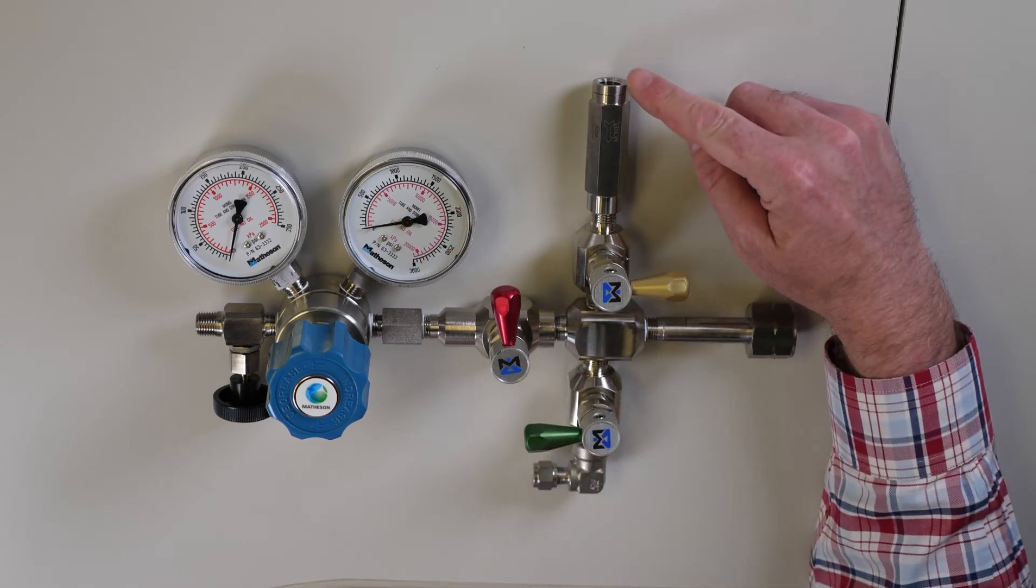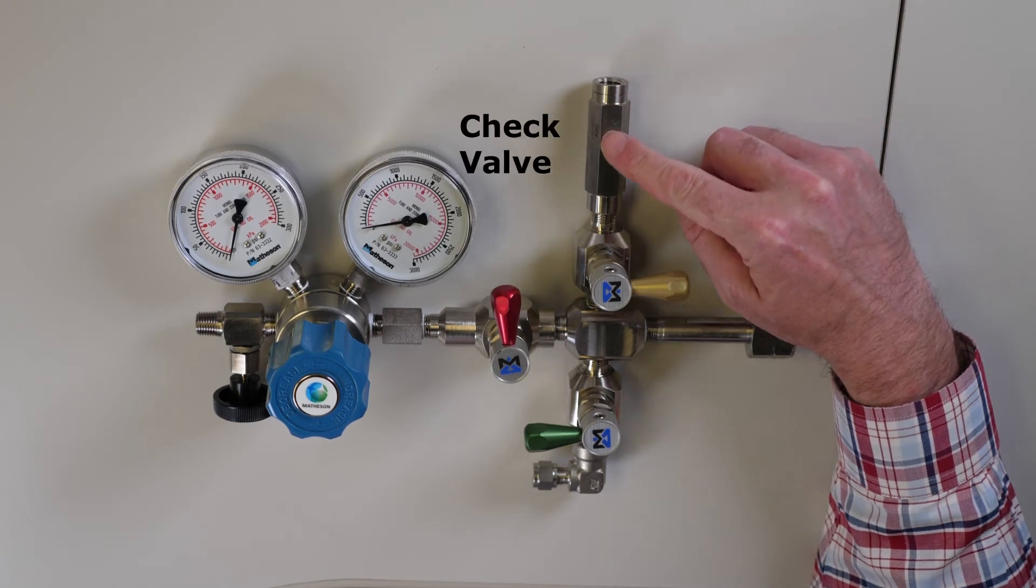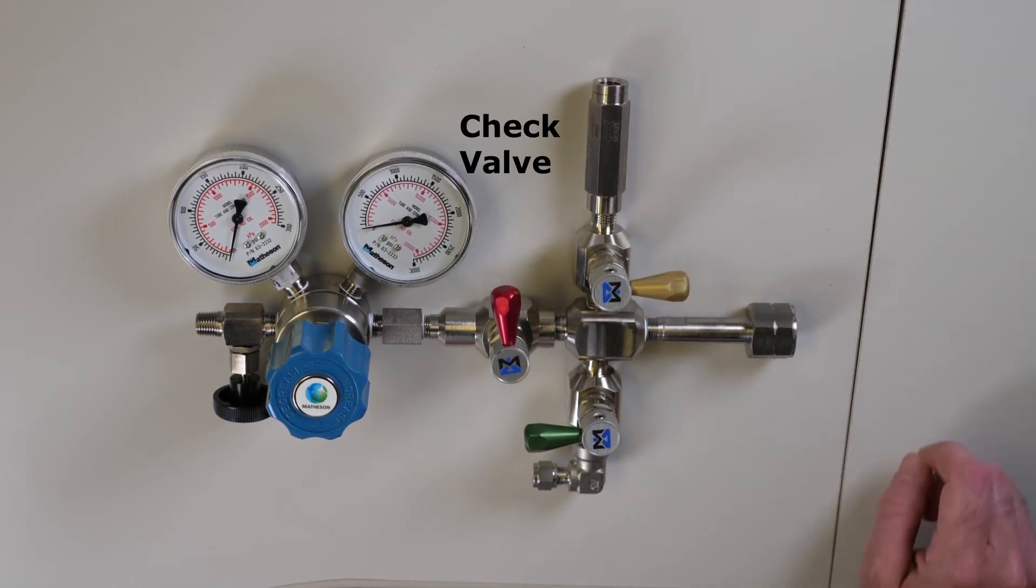You will need to supply 50 to 100 PSI of clean dry nitrogen. A check valve prevents corrosive gas backflow into the purge gas system.